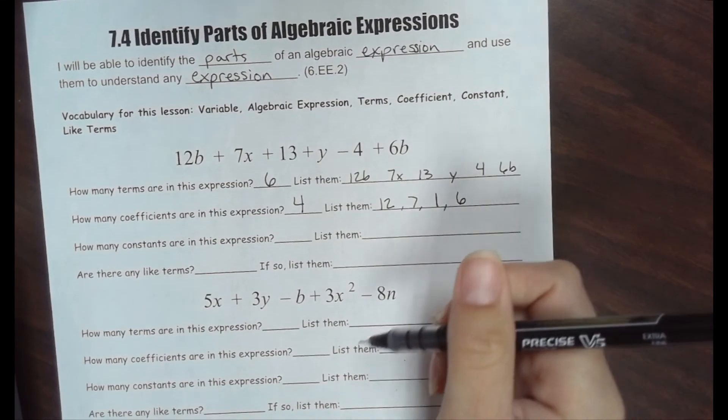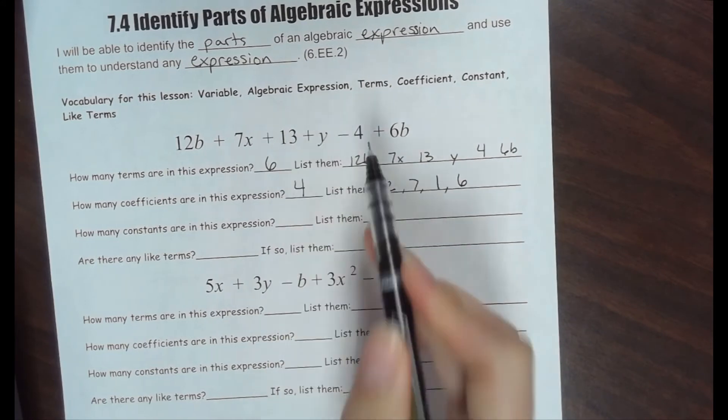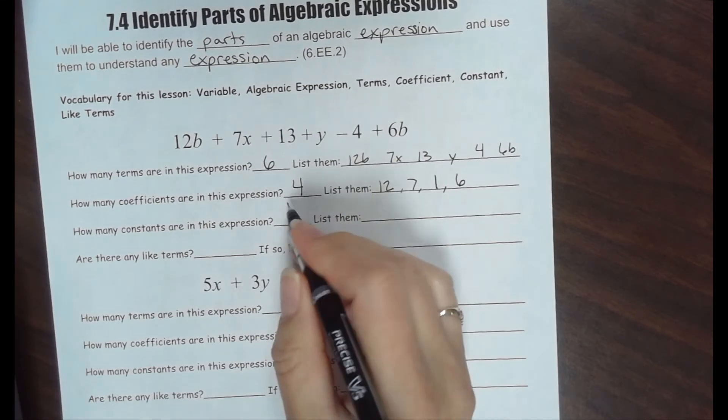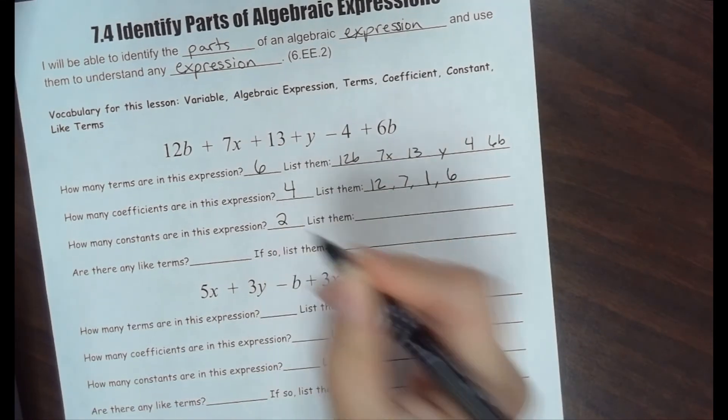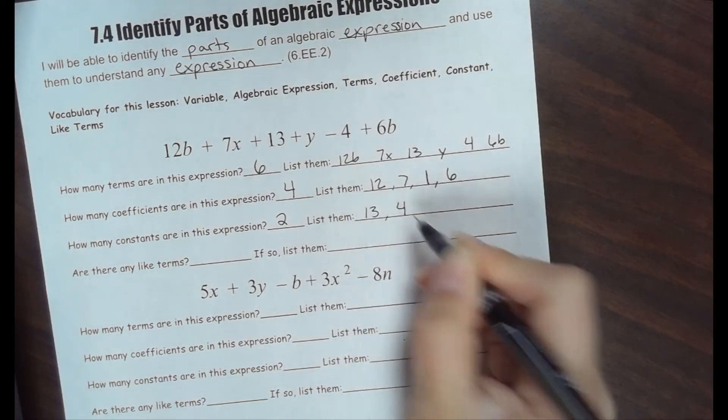How many constants are in this expression? We have 13, and we have 4. So there are two constants. 13 has no variable, and 4 has no variable.